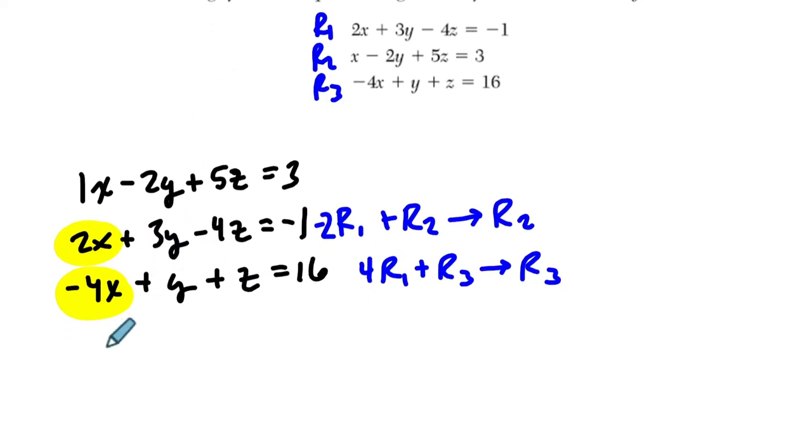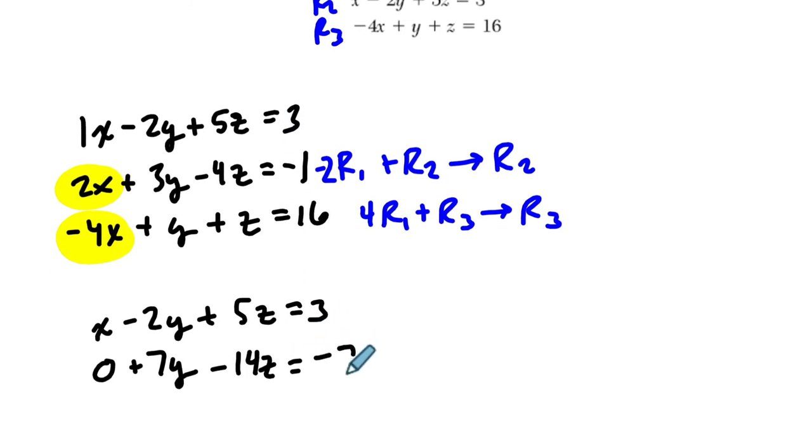Now watch what happens if I do this. We have x minus 2y plus 5z equals 3. Now I have a 0 here, because negative 2x plus 2x is 0. Then we have to multiply everything in the first row by negative 2, and add it to the second row. So negative 2y times negative 2 is 4y, plus 3y is 7y, and negative 2 times 5z is negative 10z. So negative 10z plus negative 4z is negative 14z, and then negative 6 plus negative 1 is negative 7.